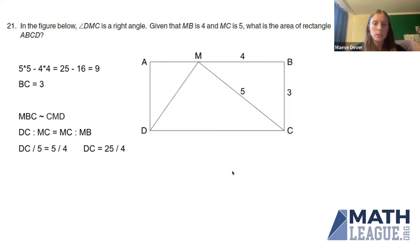Now we know DC and we know BC, so we know the height of the rectangle and the width of the rectangle. We just multiply those: 3 times 25 fourths is 75 fourths. Now that we've solved this, let's look at the answer choices to see if any of them match up with the answer we've just gotten, and there it is, answer C.